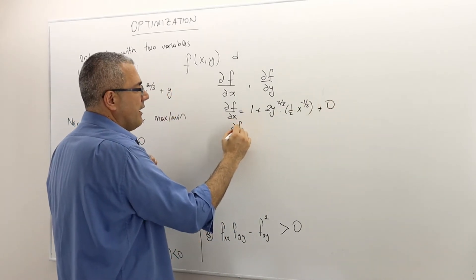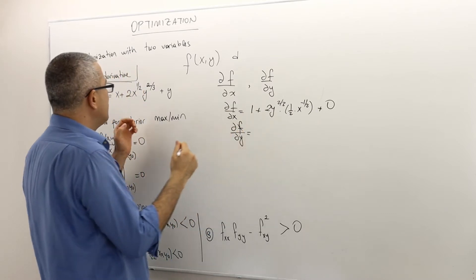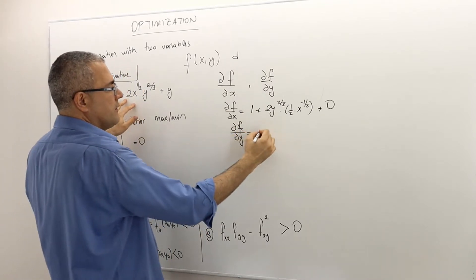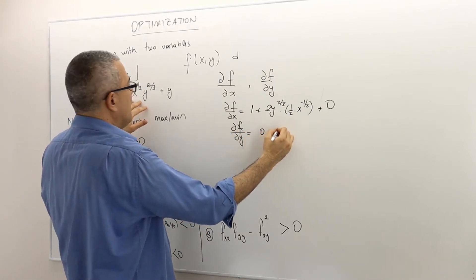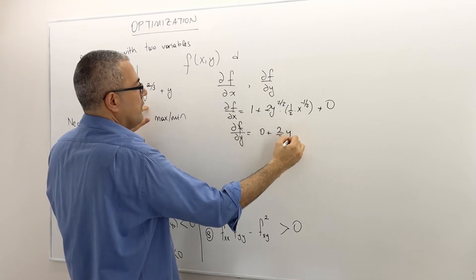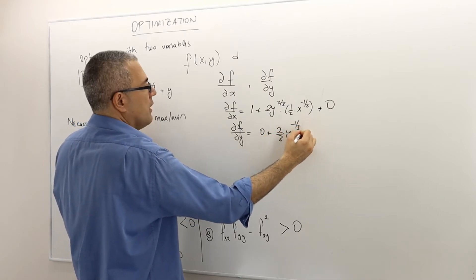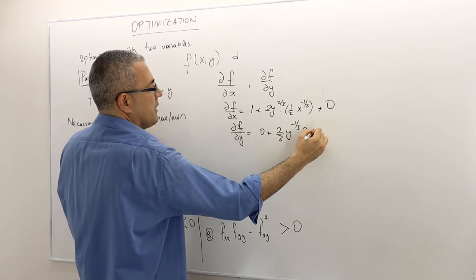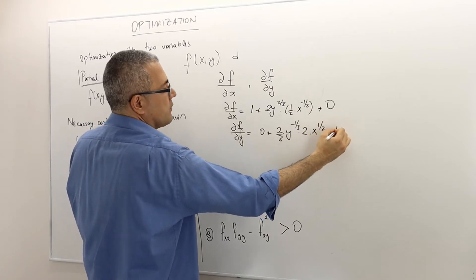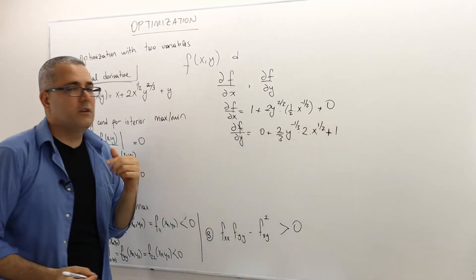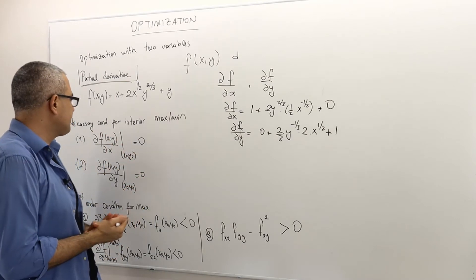And similarly, del f del y is this time I'm keeping x constant. So this is 0 plus 2 to the power y to the power minus 1 third times 2 times x to the power 1 half plus 1 because the derivative of y is equal to 1.